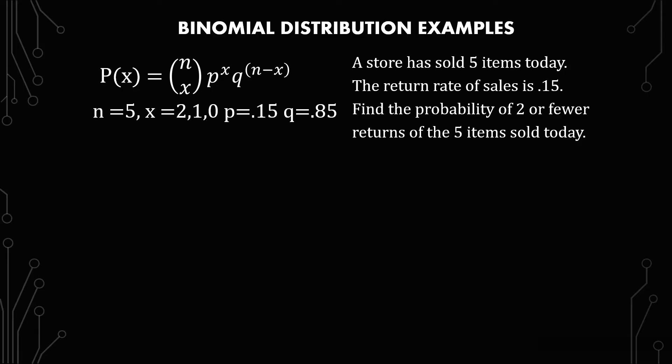We know five items have been sold. So n equals five. And we're looking for the probability of two or fewer. So what does that mean? It means we need the probability of x equals two, x equals one, and x equals zero. And we know the probability of success is 0.15. The return of sales is 15%. And then we know one minus 0.15 is q equals 0.85 or 85% of our sales are final, they don't come back. And so you can kind of see the mind game here. Let's walk through it.